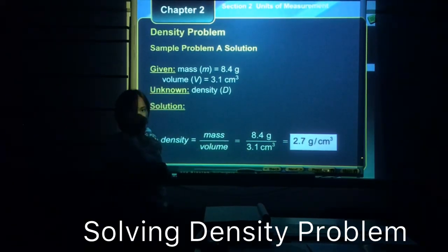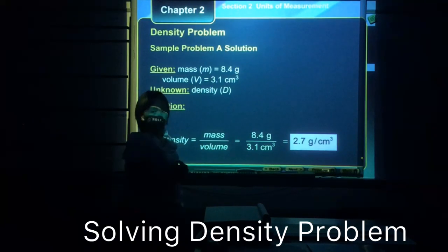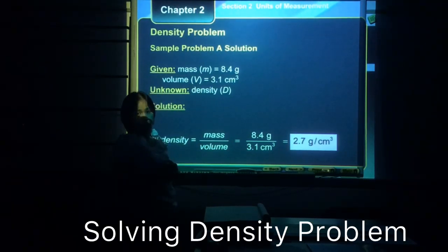Now take note that in the rule of significant figures, when we are dividing, we have to make sure that it's expressed with the least number of significant figures from the given. In which in this problem, we don't have an issue because both of the given have two significant figures. So this is the first part of the density problem that you need to solve.